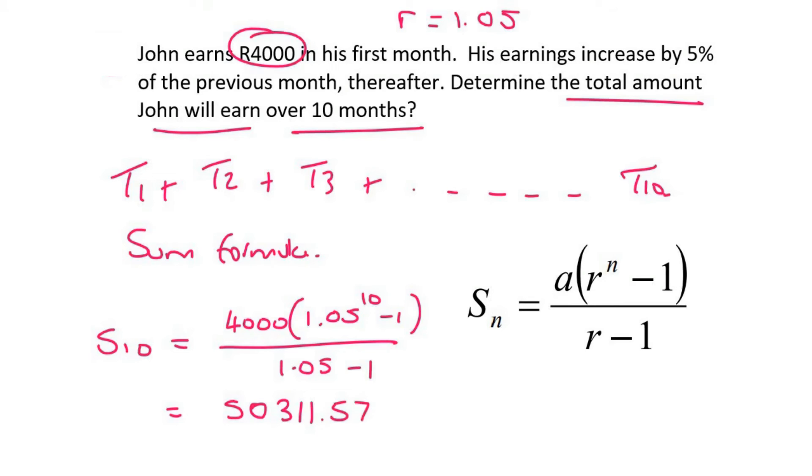I mean, this makes sense. Think about it. He earns 4,000 rand in his first month and then a little bit more in month 10. So if he only earned 4,000 rand every month, then 4,000 times by 10, he would have earned 40,000. But because they're giving him a slight increase, he's able to get his money up to about 50,000.